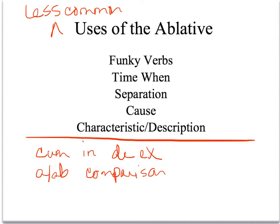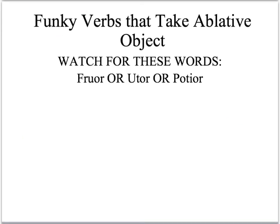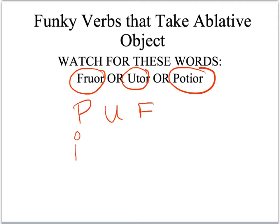This video only deals with ablative with strange verbs, time when, separation, cause, and characteristic or description. Watch out for funky verbs that take an ablative object instead of an accusative object. The three most common ones are frior, utor, and potior. One way to remember this is the word PUFF. These verbs take an ablative object as opposed to an accusative direct object, and the makers of the National Latin Exam love to put these verbs on the test.